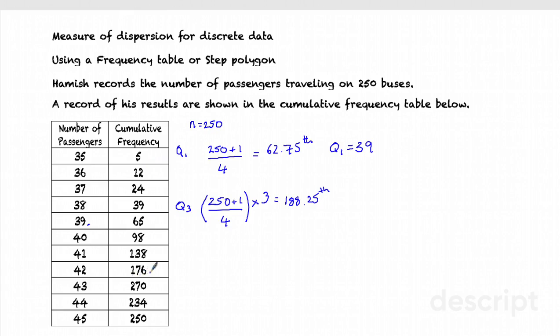Well, I've got 176 values here. I've got 270 values there. So the 188th value must be here. And that's the data of 43. Remember, this was the number of people on the bus. 43 passengers on my bus.